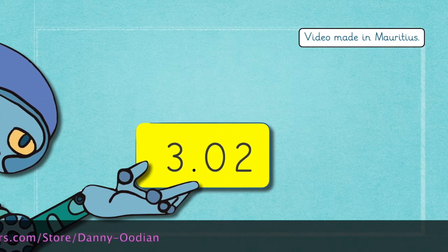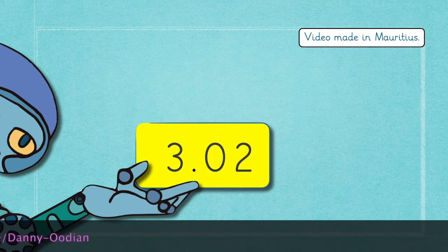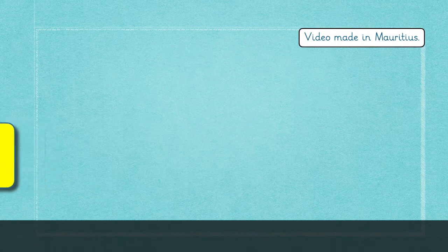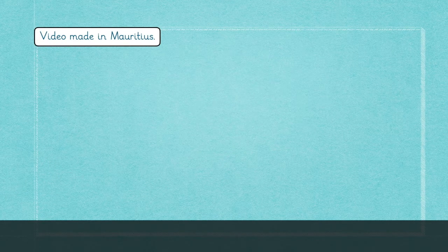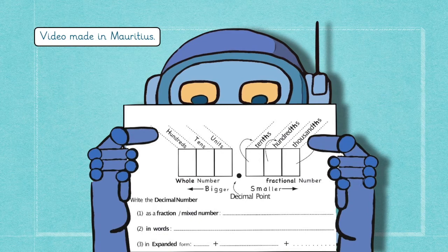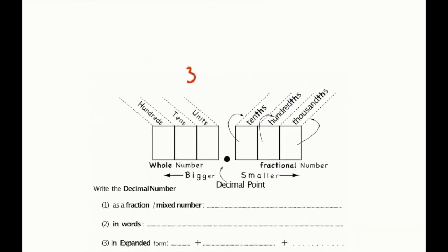3.02. Come on, fill the number in your columns. I'm going to show you how to do it. Okay, Eno. So you gave 3.02. Now I need to fill the appropriate columns with the given numbers.